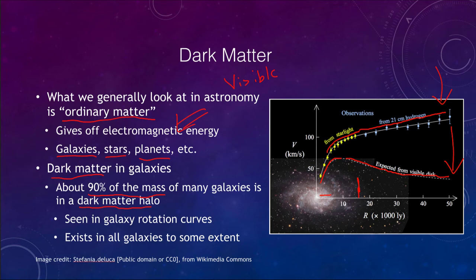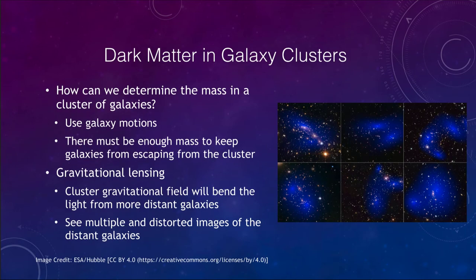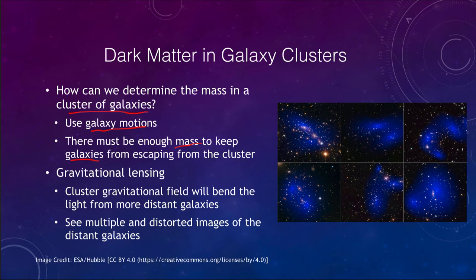The only way we can explain this is through a lot more matter within the galaxy, and we see this in most or all galaxies. How about in clusters of galaxies? There must be enough mass within the galaxy cluster to keep the galaxies from escaping — otherwise clusters and superclusters would not remain and would disappear over time.